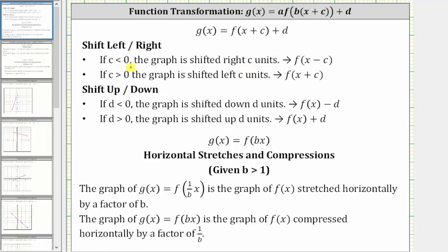If c is less than zero, then we have the form x minus c, and the graph is shifted right c units. If c is greater than zero, then we have the form x plus c, and the graph is shifted left c units. If d is less than zero, then the graph is shifted down d units, and when d is greater than zero, the graph is shifted up d units.